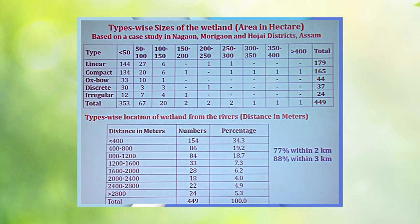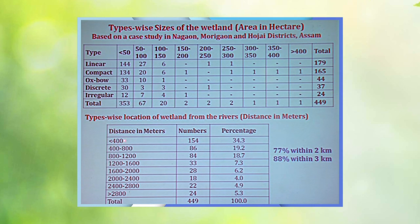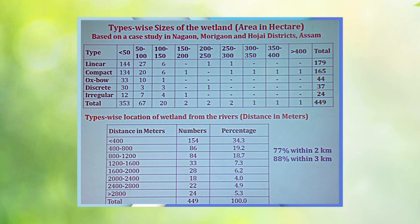Regarding size category, wetlands of less than 50 hectares are found in the largest number. As you go away from rivers, the number of wetlands decreases. Within 400 meters of rivers, the wetland number is more than 34%. The number decreases from 400 to 800, and from 800 to 1,200 meters. As a result, 77% of wetlands have been found within 2 kilometers of rivers, and 88% within 3 kilometers from rivers in the state.